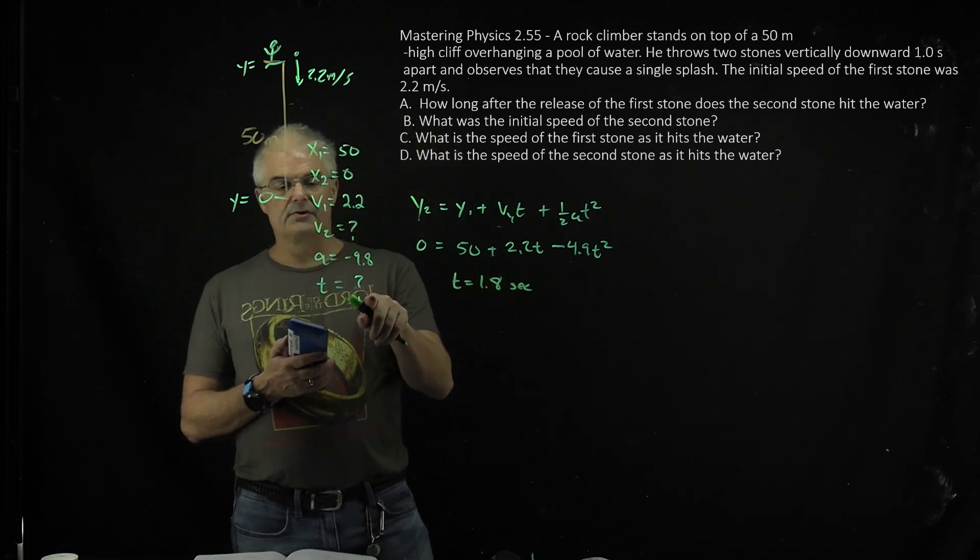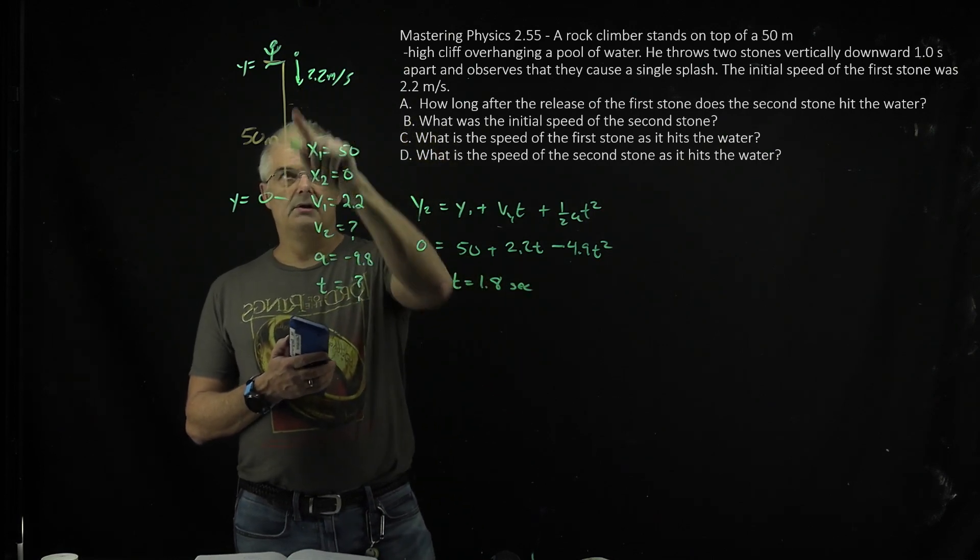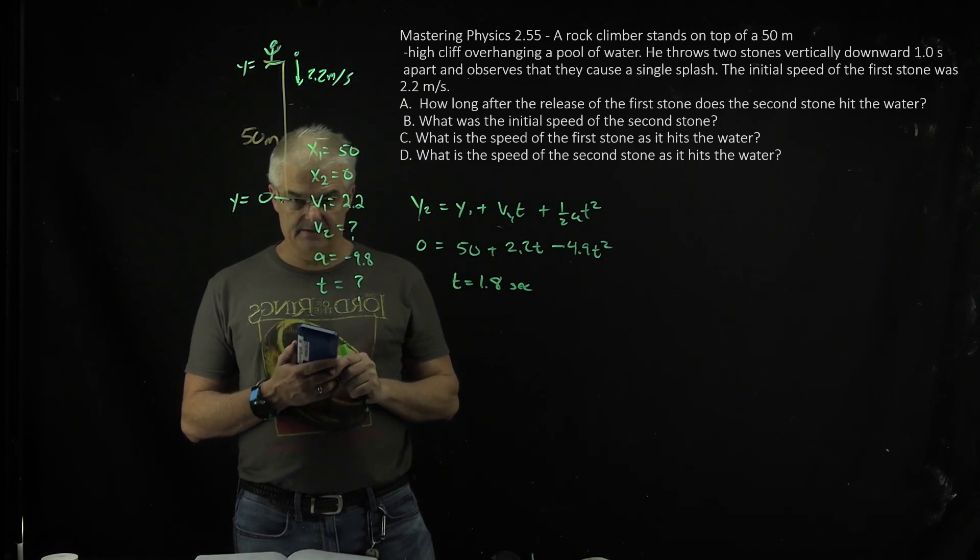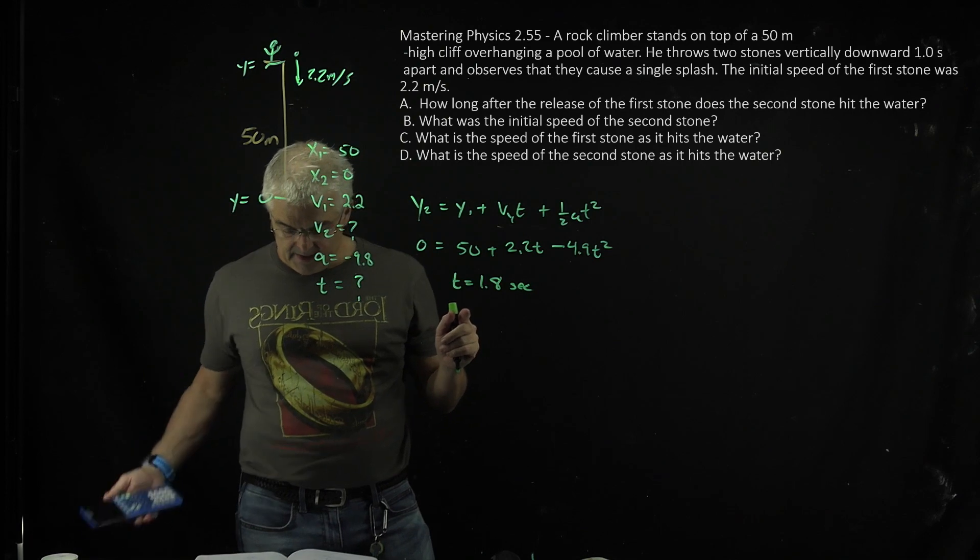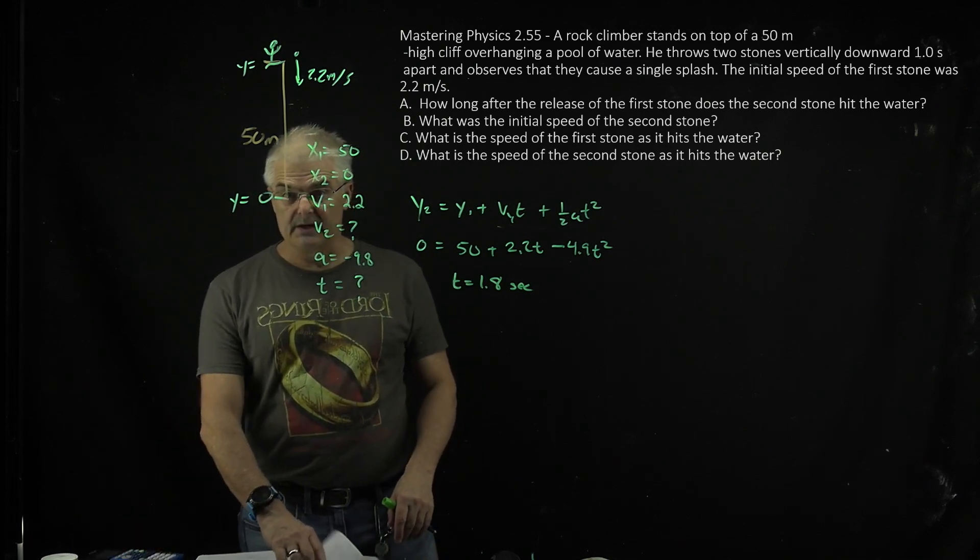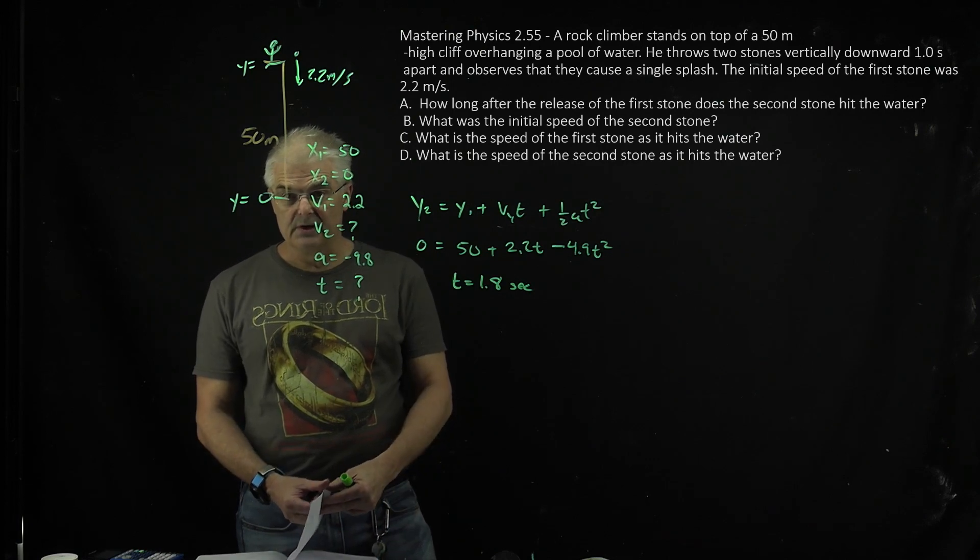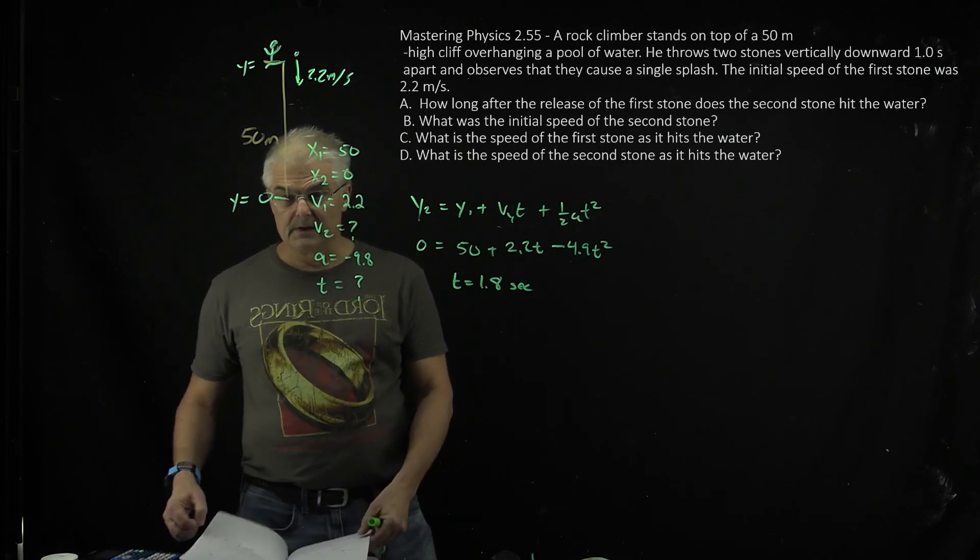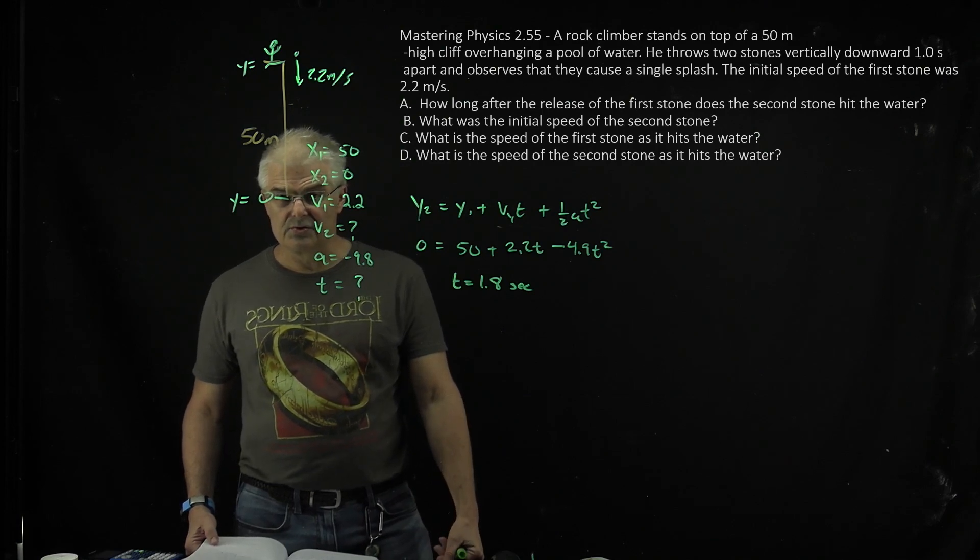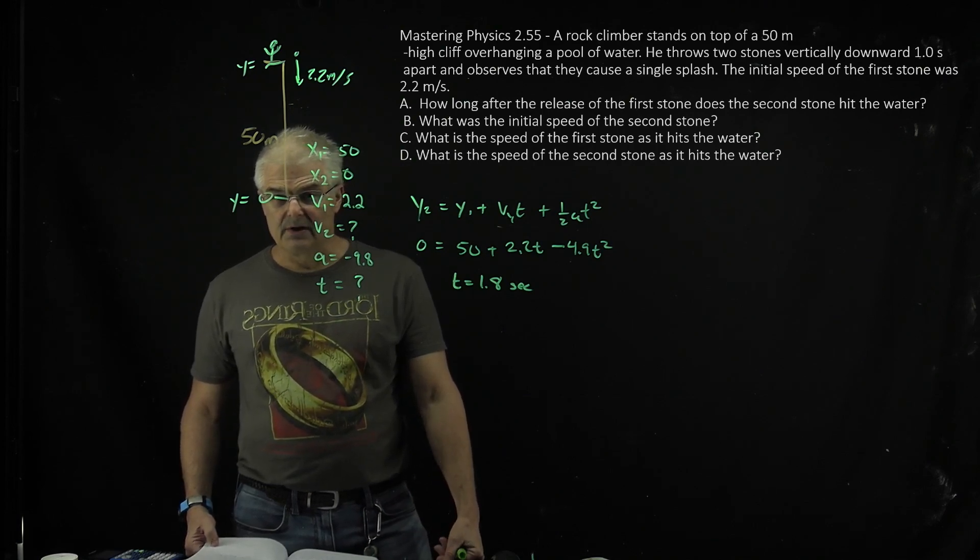So for the first ball, or rock, whatever, it's going to take 1.8 seconds. Got it? Now, the question, the next question is, is what's the gap in between, or how long do I need to... initial speed of the first stone was 2.2. He throws two stones vertically downward. How long after the release of the first stone does the second stone hit the water?